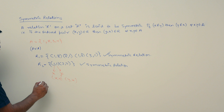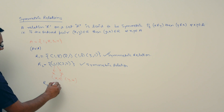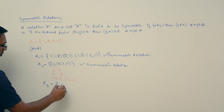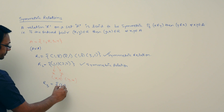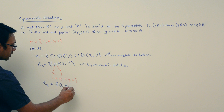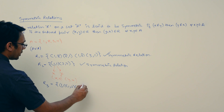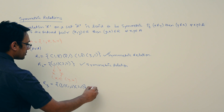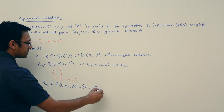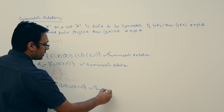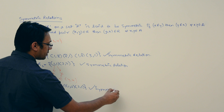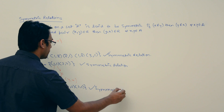Let us assume the relation R3 which is equal to {(1,1), (1,2), (2,1)}. This relation is also symmetric.